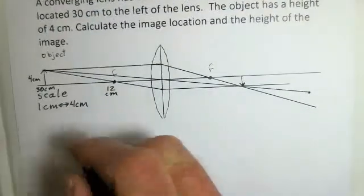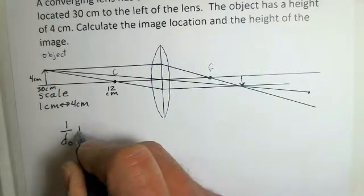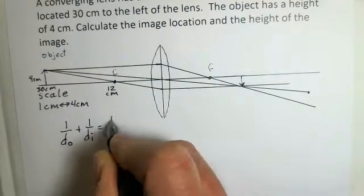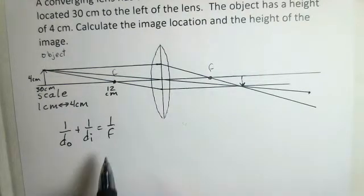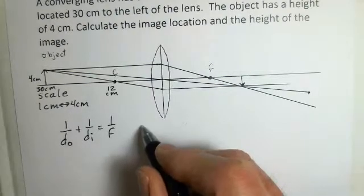Our lenses and mirrors are all analyzed with this equation: one over the object distance plus one over the image distance equals one over the focal length. In this problem, we were given the object distance.